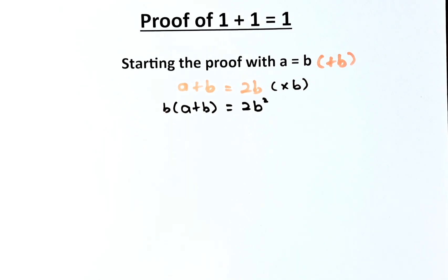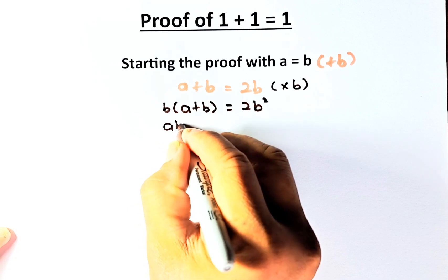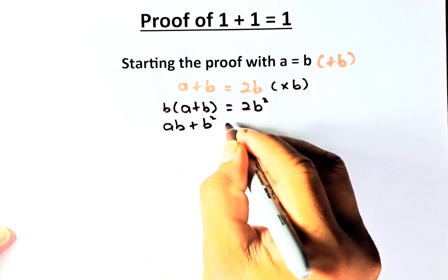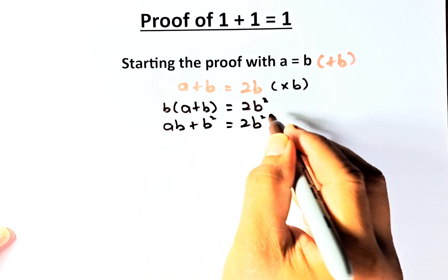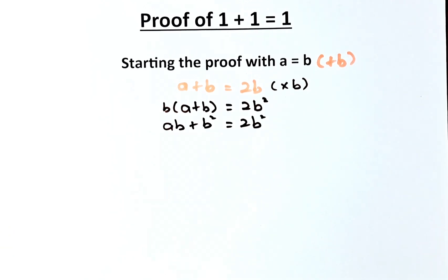Now, what we're going to do is we are going to expand the equation from part 2. So we're going to get ab plus b squared equals to 2b squared. No issues at all.